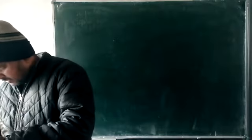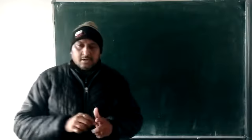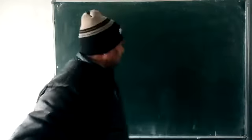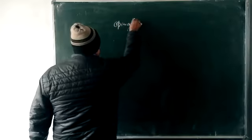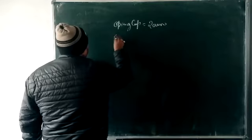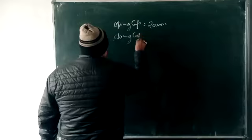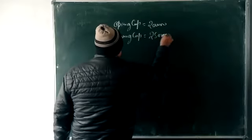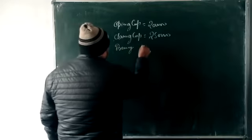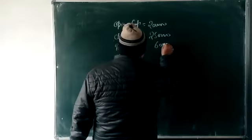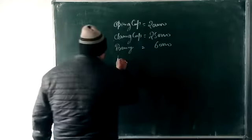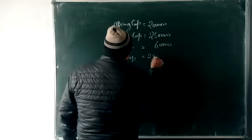Question number one: Atul does not keep proper records of his business. He gives the following information — Opening Capital: 2 lakhs; Closing Capital: 2 lakhs 50,000; Drawings: 60,000; Additional Capital added during the year: 75,000.